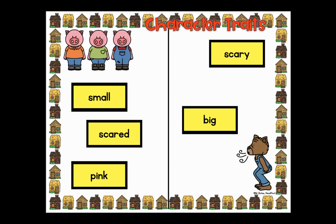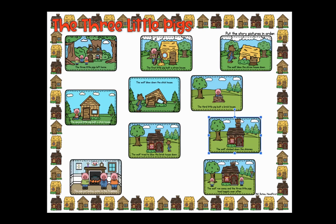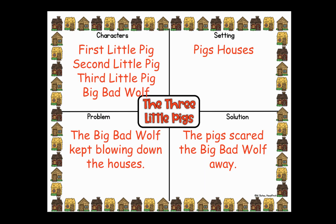These you drag and drop to tell about the different character traits of the characters in the story. This is another drag and drop where they put the story pictures in order. Here's a story map where they can put in the different characters and setting, problem and solution.